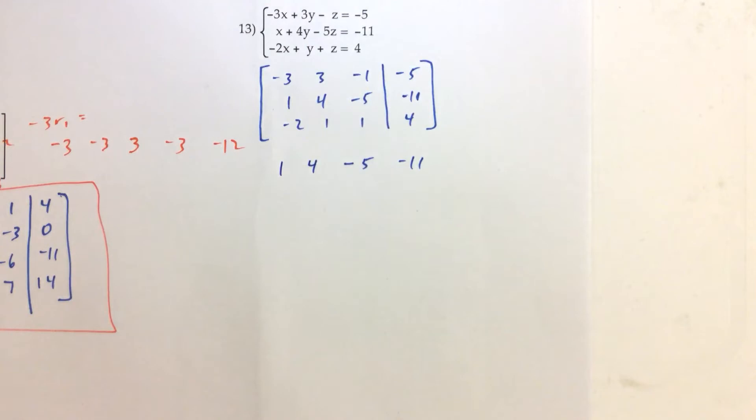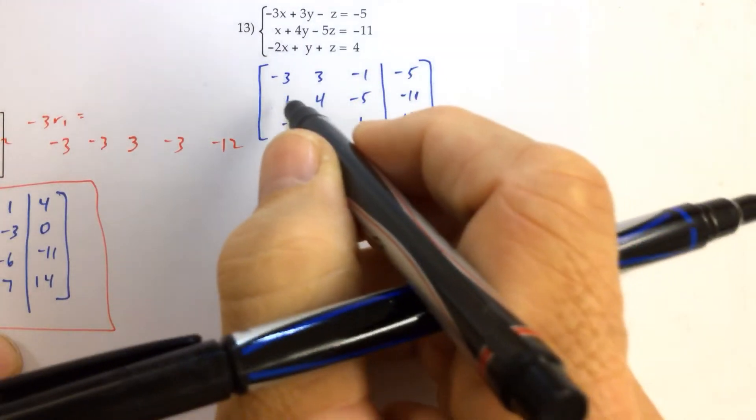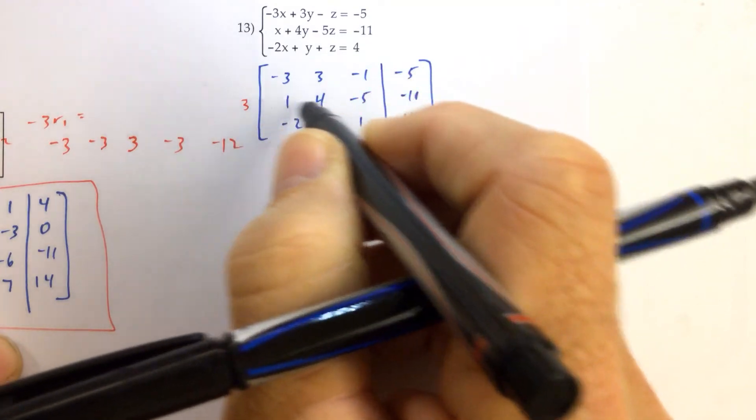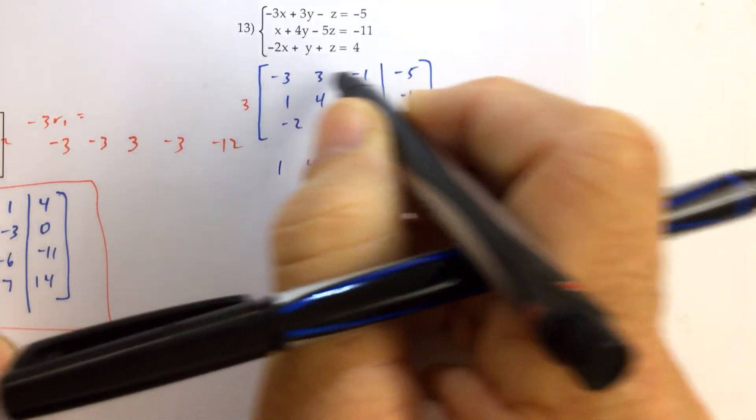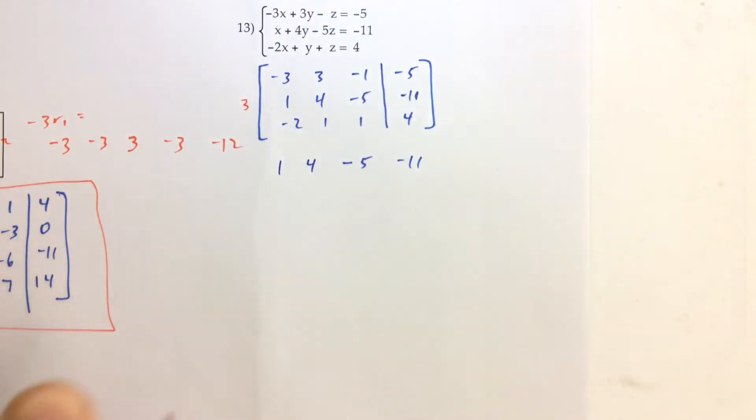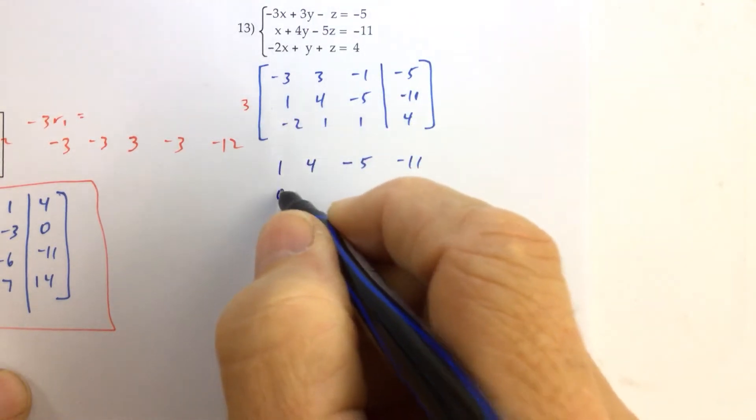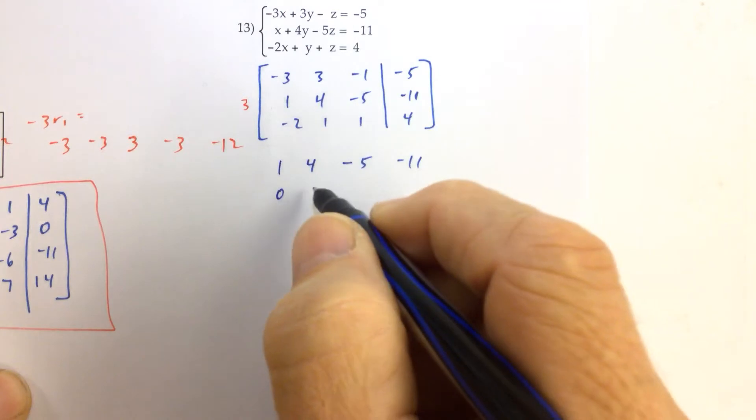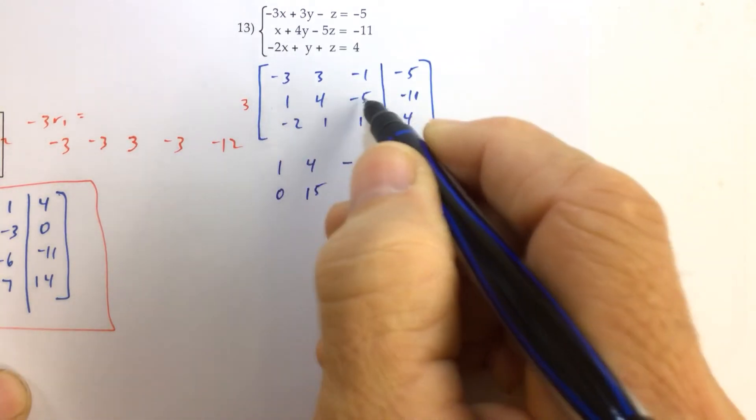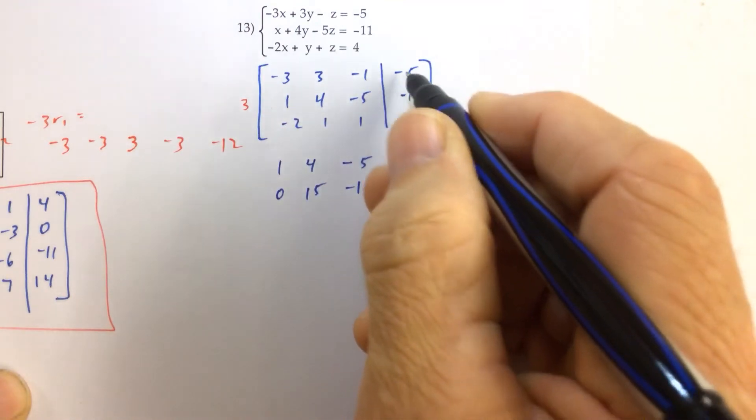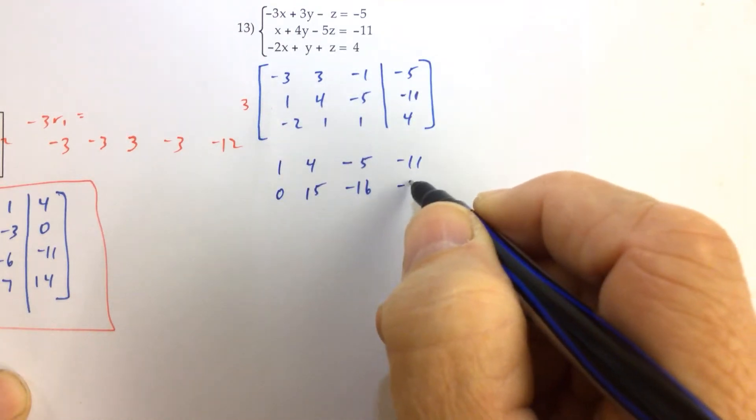But now, what I want to notice here is that if I multiply this row here by three. So I'm going to take this row and multiply it by three. I'm going to add it to the first row and that's going to become my new second row. So three times one is three. Three minus three is zero. Twelve plus three is fifteen. Negative fifteen and negative one is negative sixteen. Negative thirty-three and negative five is negative thirty-eight.